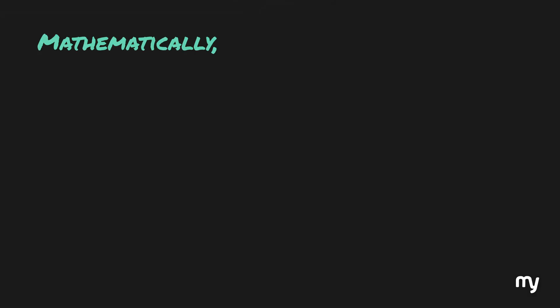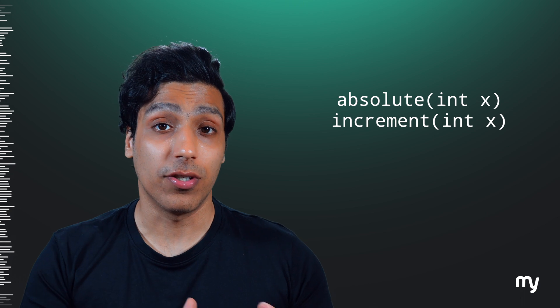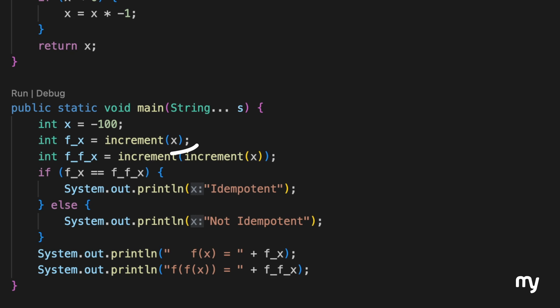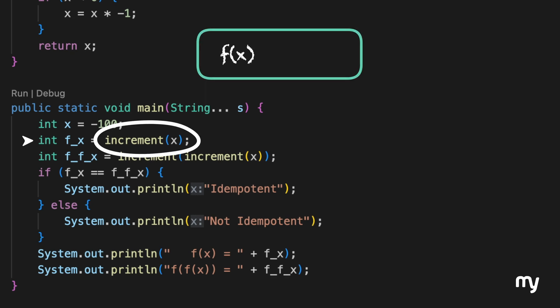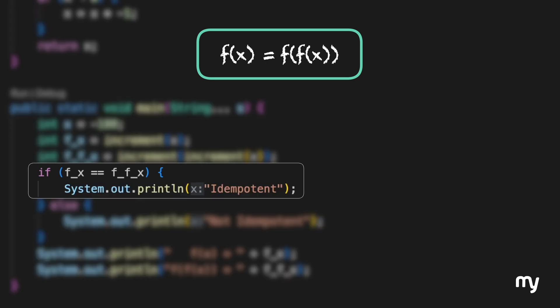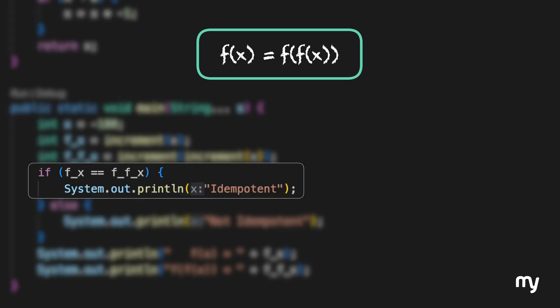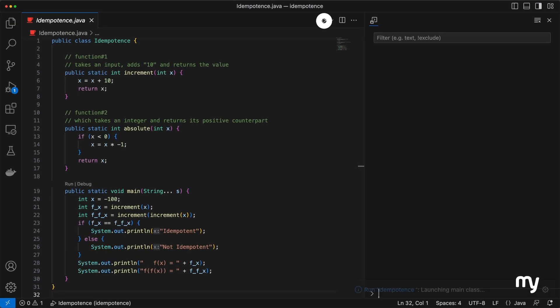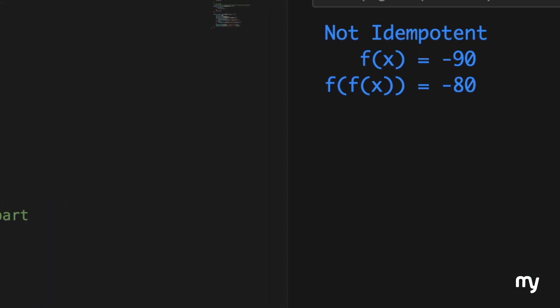Now mathematically, a function is said to be idempotent if this expression is true: f(f(x)) = f(x). Let's see if our functions match this expression. For our first function — the increment function — f(x) becomes increment(x) and f(f(x)) becomes increment(increment(x)). We simply try to see if they're equal. As you can see, this method is not idempotent.